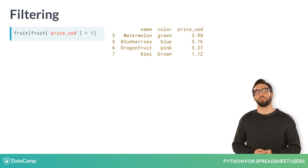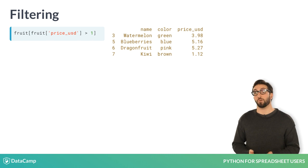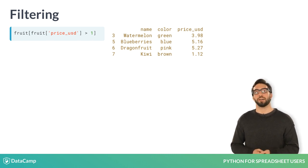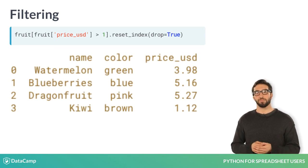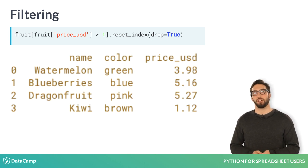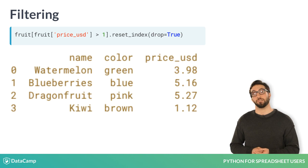Notice how when we filter, the index does not remain sequential or start at 0. In the exercises, you might see code like this, where the reset_index method is tacked onto the end of your comparison. Note how the index is now sequential and starting at 0.